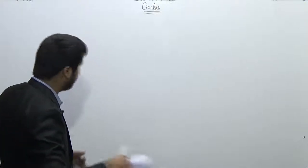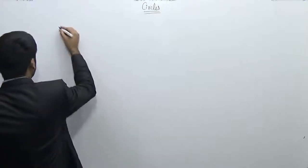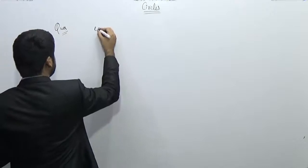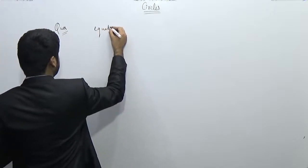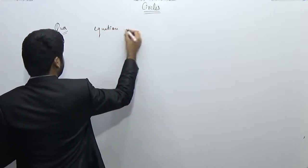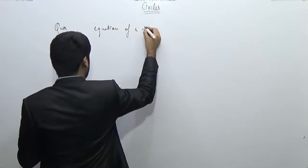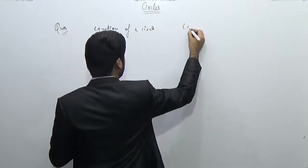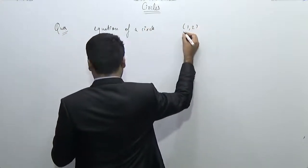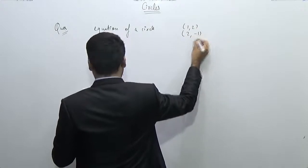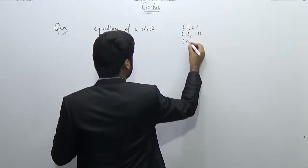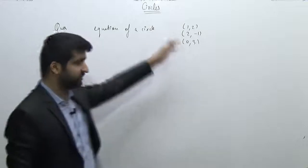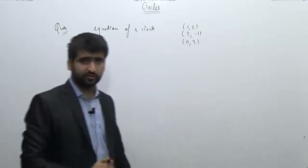Find the equation of a circle which is passing through the points (1, 2), (2, -1), and (0, 3). So the circle is passing through these three points, and we want to find the equation of the circle.